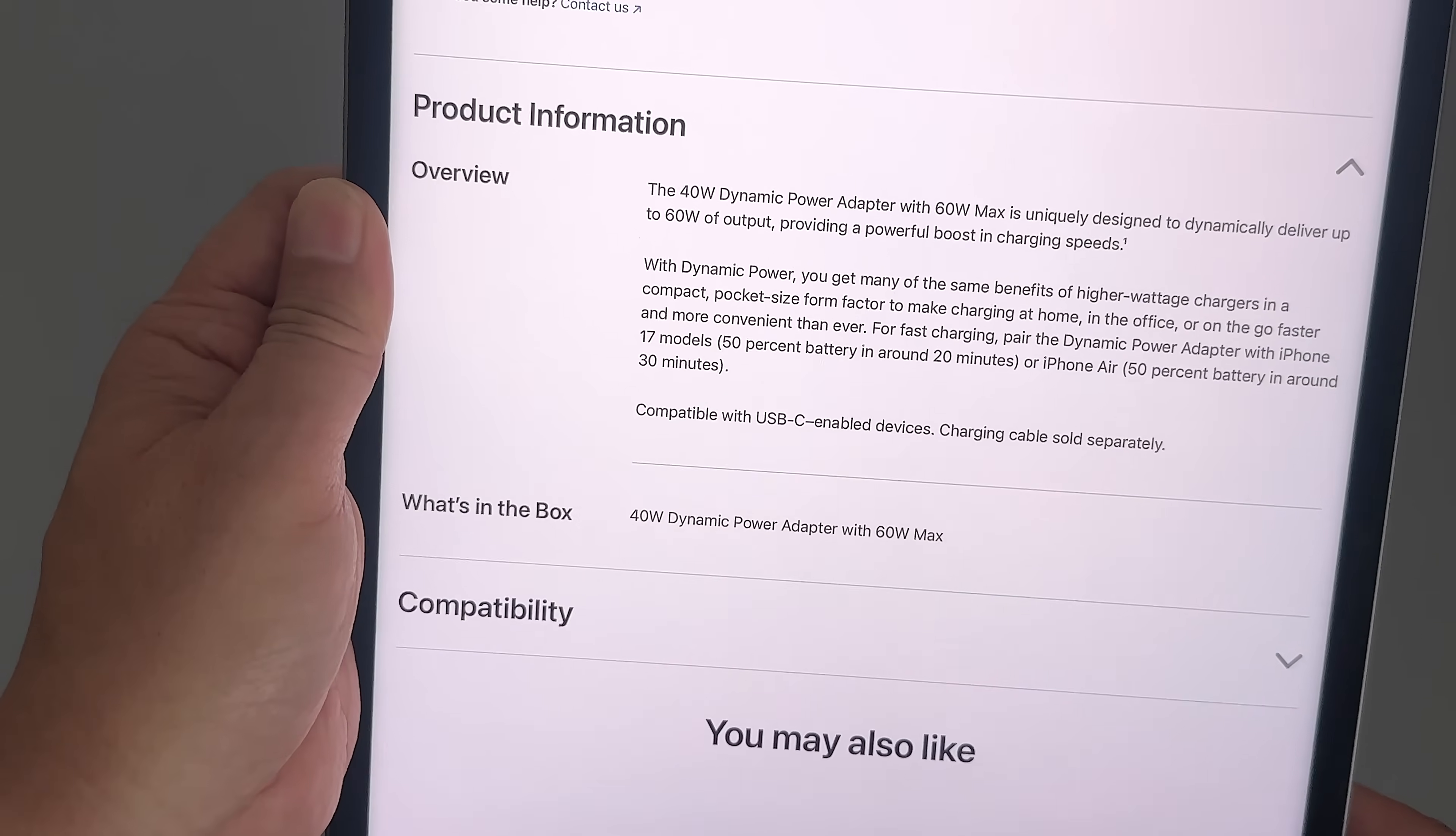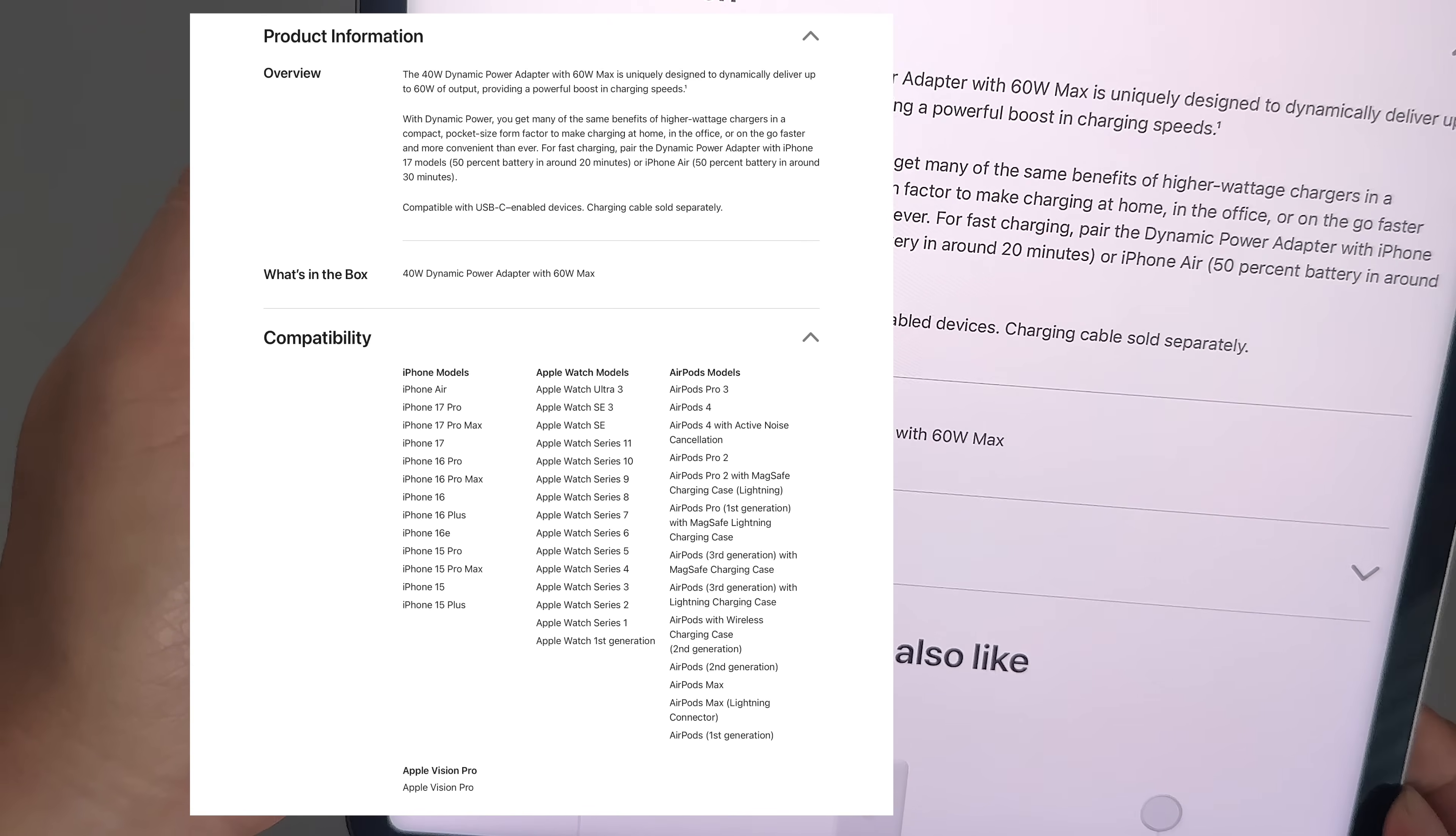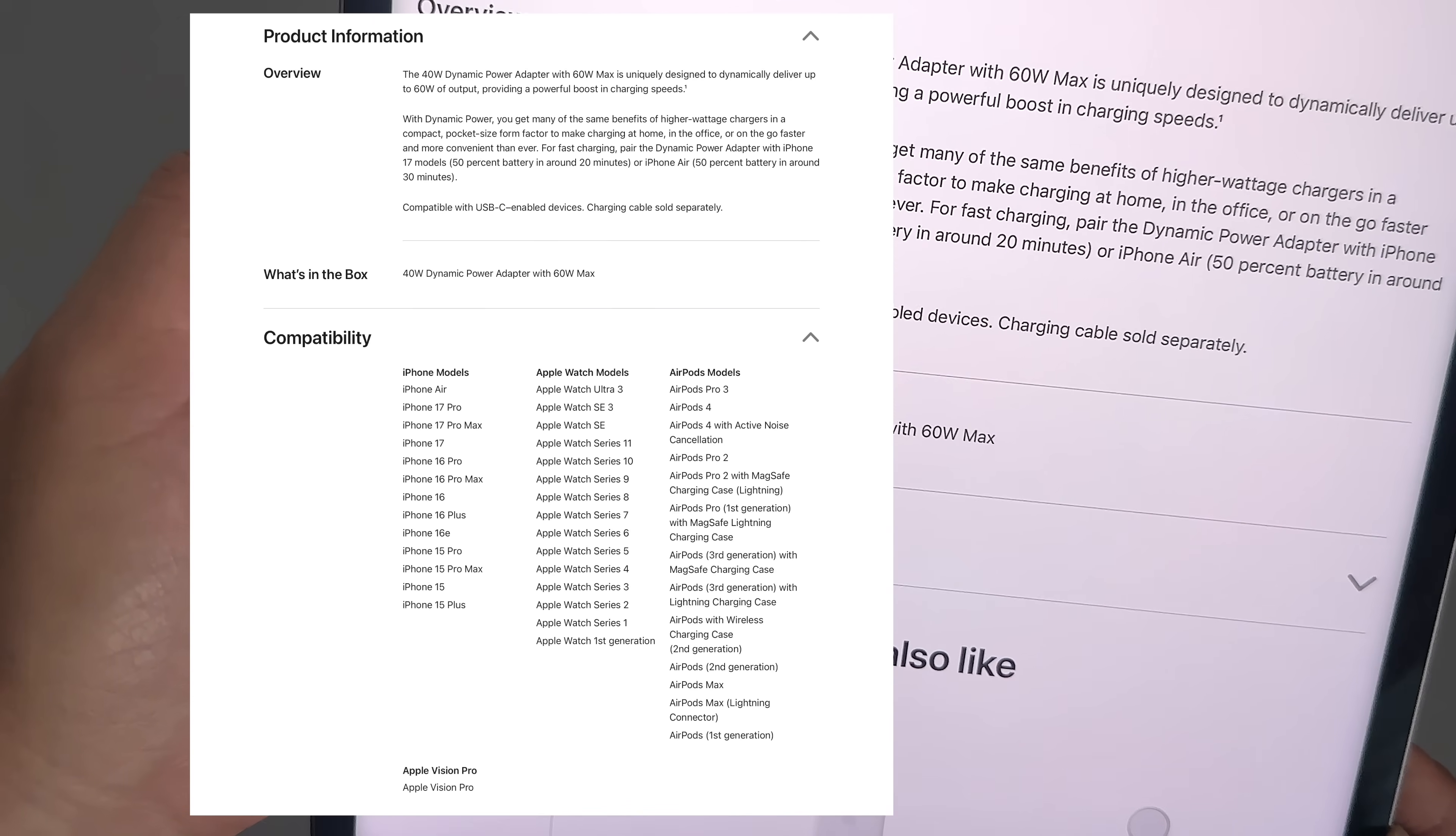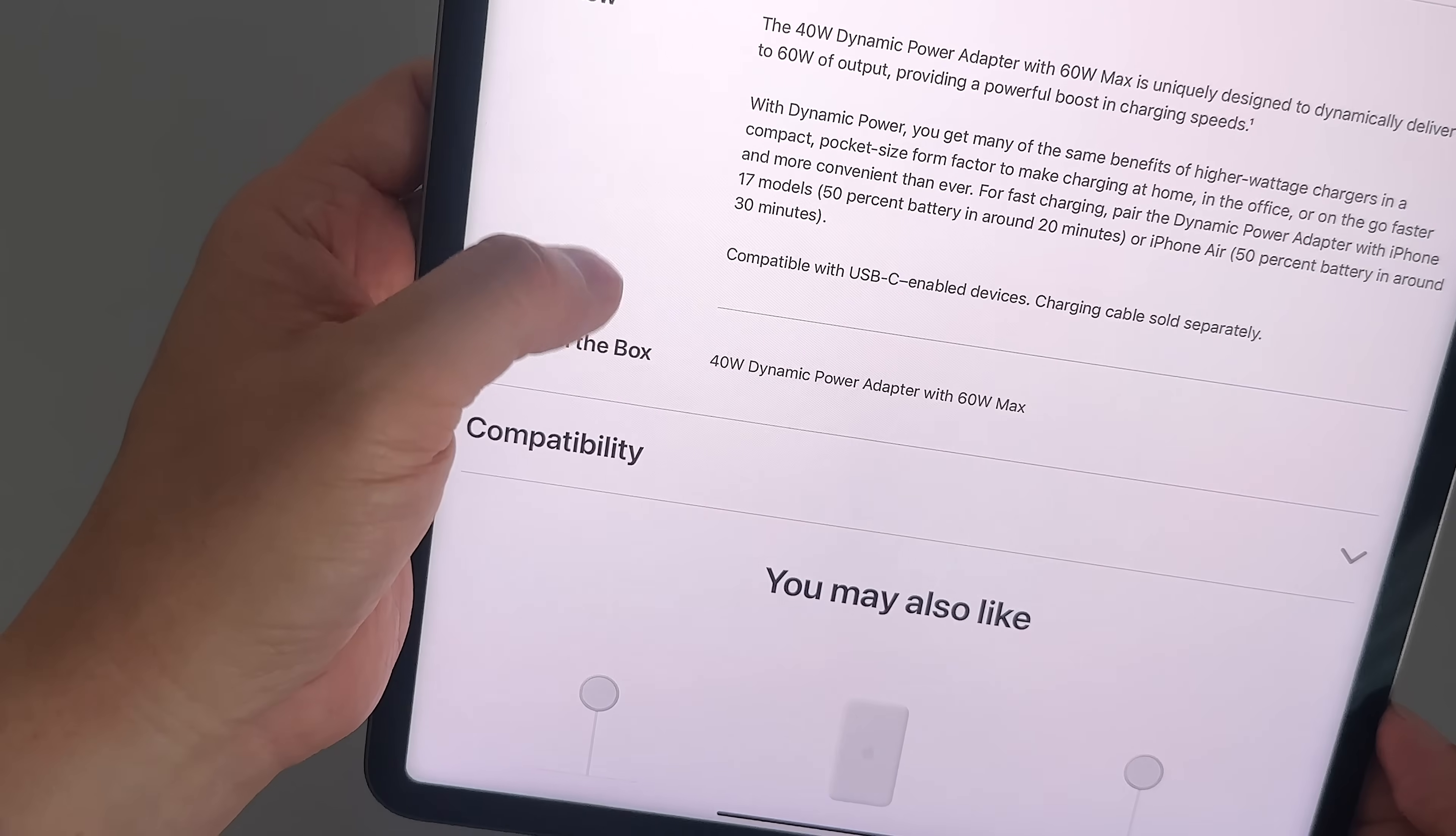Now, on the product description it says the 40W dynamic power adapter with 60W max is uniquely designed to dynamically deliver up to 60W of output, providing a powerful boost in charging speeds. With dynamic power you get many of the same benefits of higher wattage chargers in a compact pocket-sized form factor to make charging faster and more convenient than ever. For fast charging, pair the dynamic power adapter with iPhone 17 models—50% battery in about 20 minutes, or iPhone Air 50% battery in about 30 minutes.